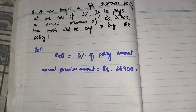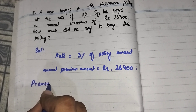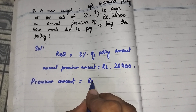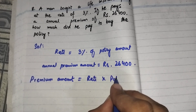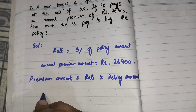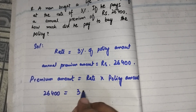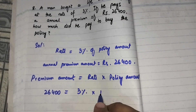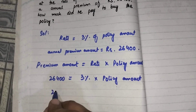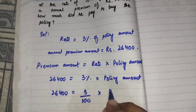We have a formula: premium amount equals rate multiplied by the policy amount. The premium amount is Rs. 26,400, the rate is three percent, and the policy amount is unknown. So 26,400 equals three percent multiplied by the policy amount.